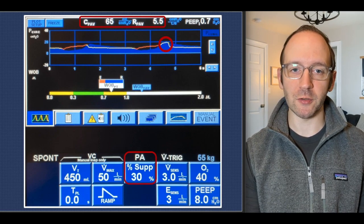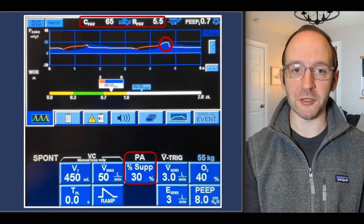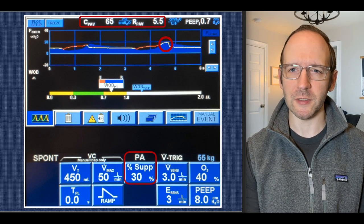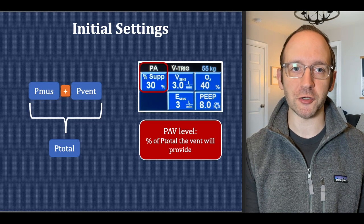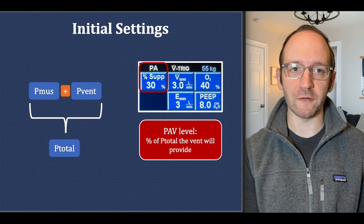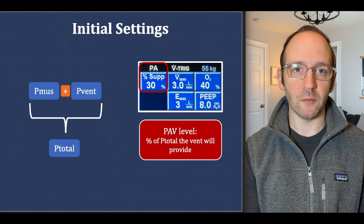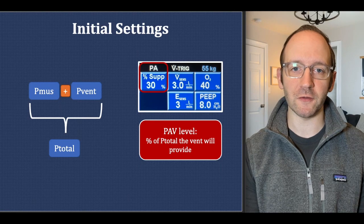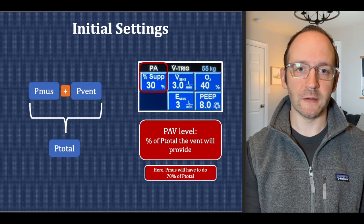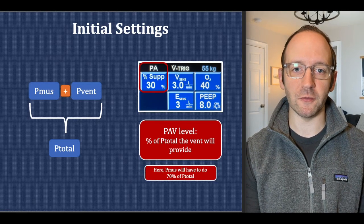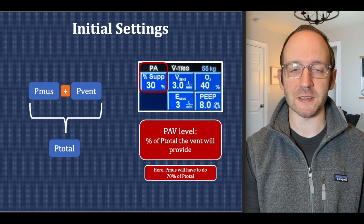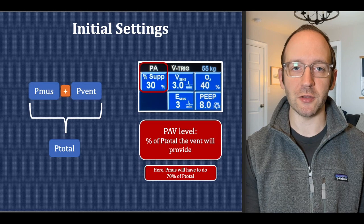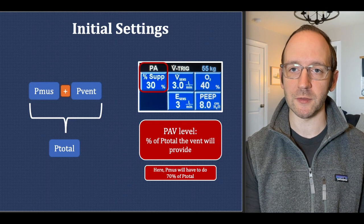A peculiar setting different from other modes is called the percent support. PAV uses the equation of motion to determine the total pressure needed to generate the breath — a combination of PMUS and PVENT. When you set percent support at 30%, that is the percent of the total pressure the ventilator will provide. So in that case, PMUS has to do 70% of the total pressure needed, meaning the patient is getting less than half the assistance needed to generate the breath. You can titrate this according to parameters we'll discuss soon.